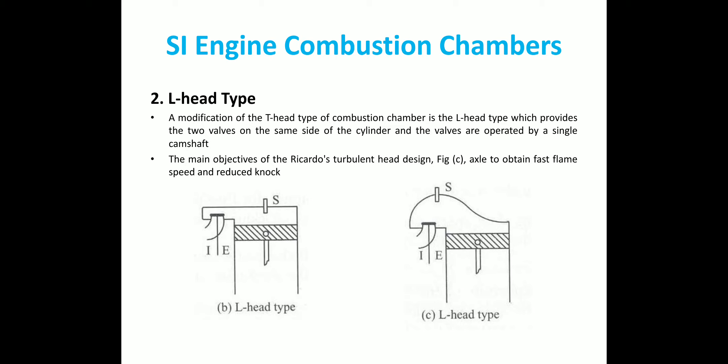The second one is L-head type combustion chamber. So there is one more variant which is Ricardo's turbulent head design, which is shown in figure C. So this L-head is a modification of the T-head type combustion chamber. So in L-head type, here the valves are provided on the same side of the cylinder which can be operated by single camshaft. So here it can be operated by single camshaft, which is an advantage when we are comparing with the T-head type. Also, here it is easy to lubricate the valve mechanism with a detachable head provision here. Also, the cylinder head can be removed without disturbing the valves. So these are the advantages in L-head type combustion chamber.